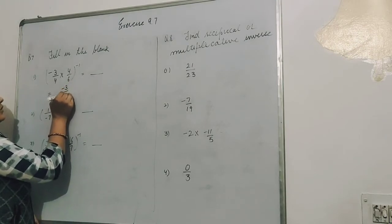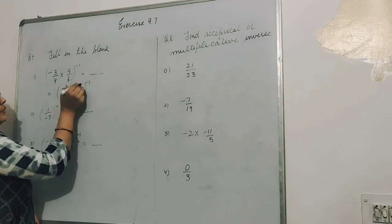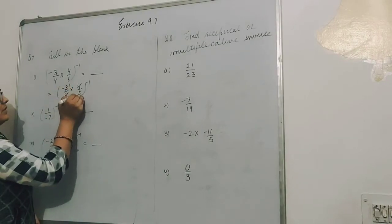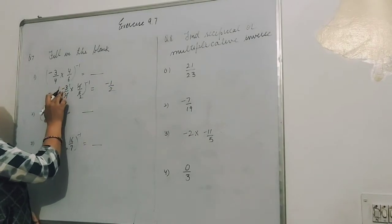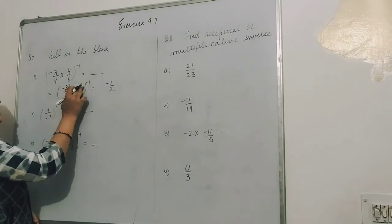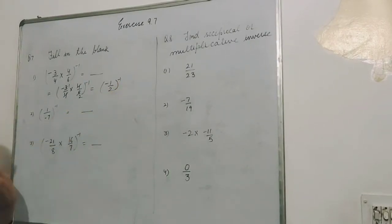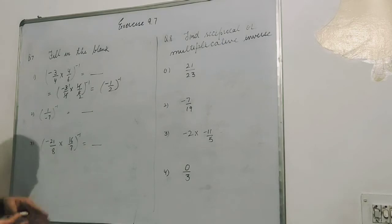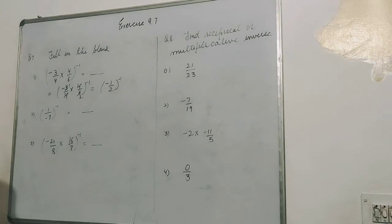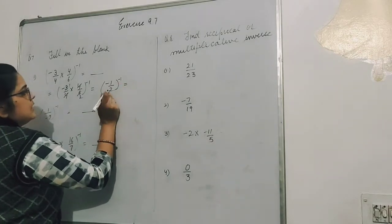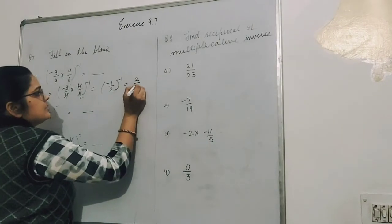Minus 3 upon 4 multiply 4 upon 6. 4 cancels with 4, 3 by 3, 3 into 6 gives minus 1 upon 2. Now power minus 1 means we have to take the reciprocal. Reciprocal means numerator becomes denominator and denominator becomes numerator. So denominator is 2, reciprocal will be numerator 2 and denominator minus 1.